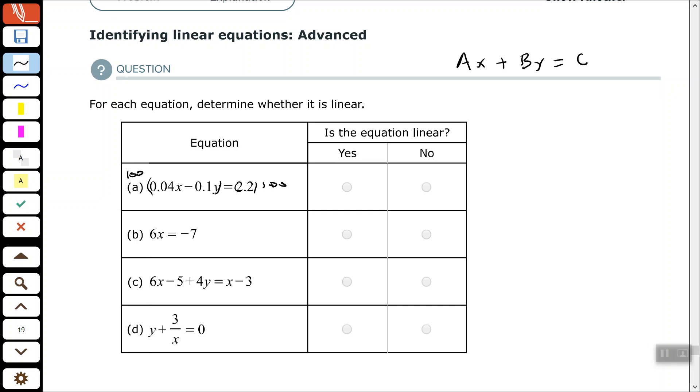then if I multiply using my distributive property by 100, I would get 4x minus 10y equals 220. This definitely fits the definition of a standard linear equation, so yes.